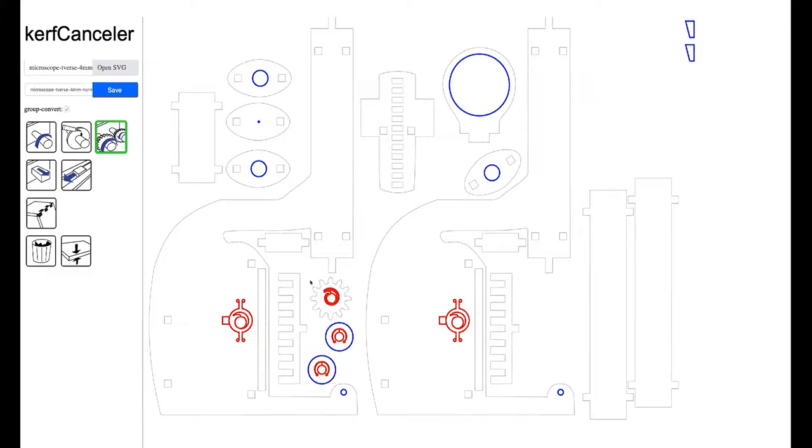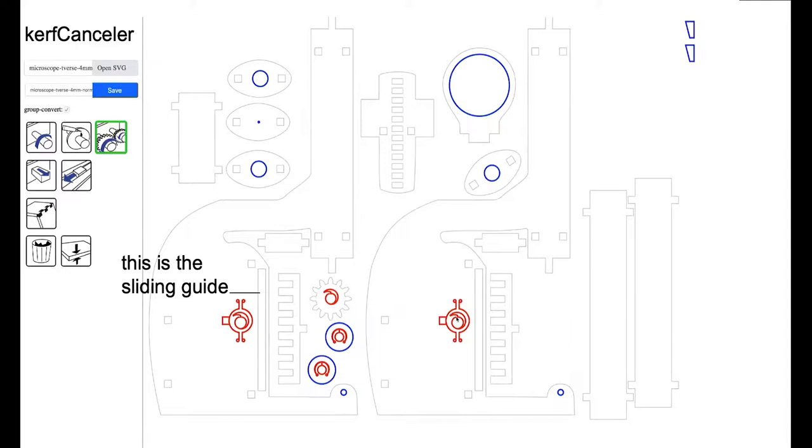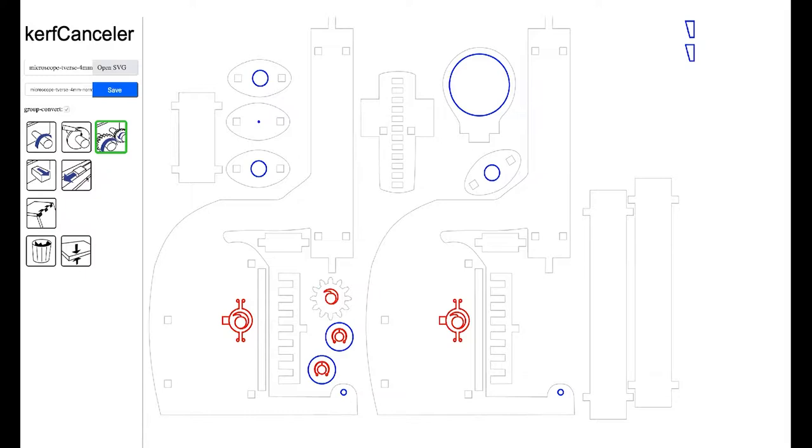Finally, the sliding mechanism is also not cast ahead of time by KerfCanceler. Sliding mechanisms typically manifest themselves as rectangular cutouts, but are relatively rare. If KerfCanceler would turn every rectangular cutout into a sliding mechanism, it would result in a lot of false positives. Therefore, KerfCanceler relies on users to place these sliding mechanisms in the model, using the sliding tool.